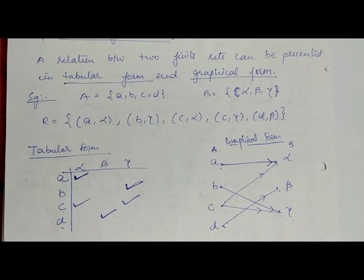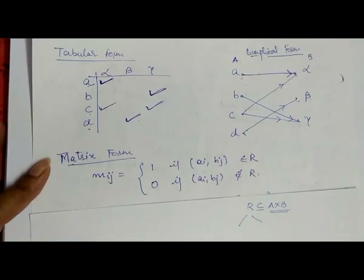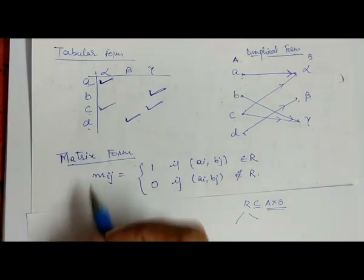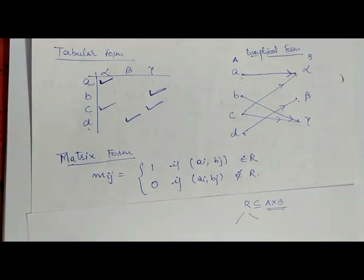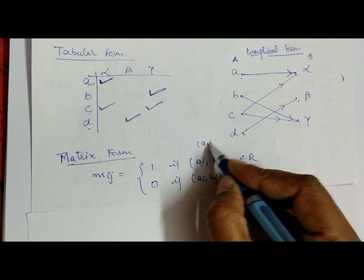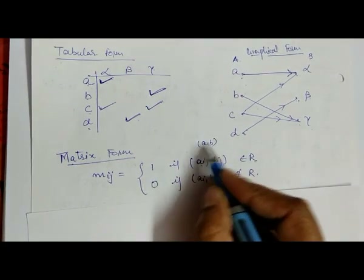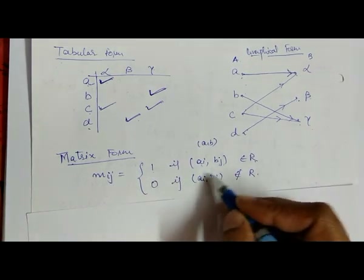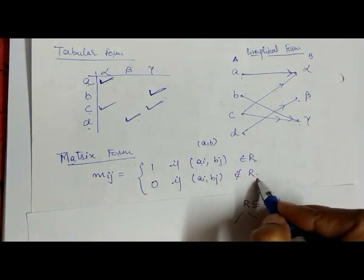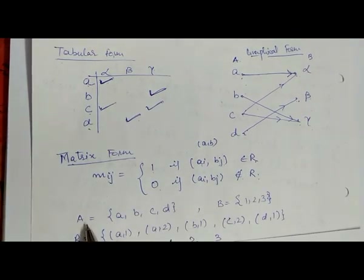Now there is one more representation of relation R, and that is matrix form. If we represent the relation in matrix form, the rule is: if a pair (a_i, b_j) belongs to R, then the matrix value is 1; and if the pair does not belong to R, then the value is 0.